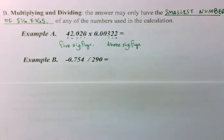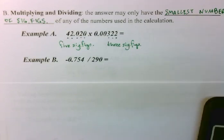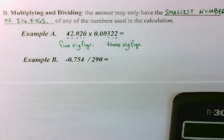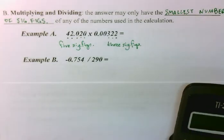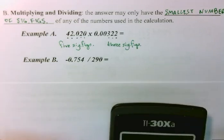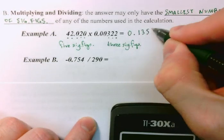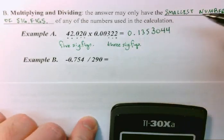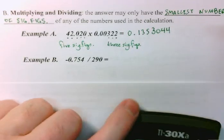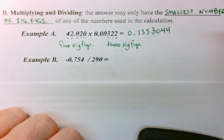The rule for multiplication, therefore, would say that my answer can have no more than three sig figs. Now, if I plug this in into my calculator, I will get 42.020 times 0.00322. And the calculator will give me 0.1353044, which is the mathematically correct answer.